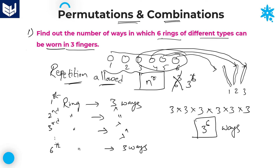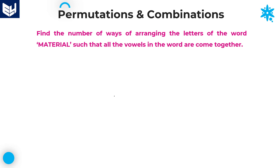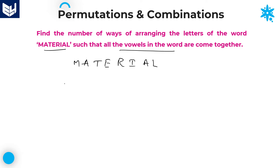We can wear six rings on three fingers in 3^6 ways. The key condition here is repetition allowed. Next question: find the number of ways of arranging the letters of the word MATERIAL such that all the vowels come together. The vowels in the word MATERIAL are A, E, I, A — these are the four vowels.